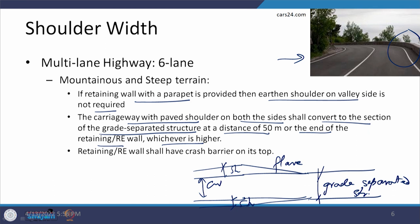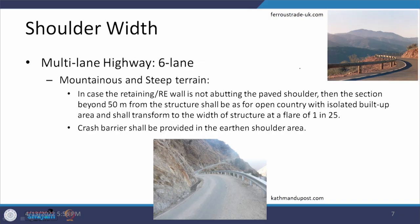If retaining walls, RE walls, or abutments are being provided, those should be considered. Another important provision is that the retaining wall or RE wall shall have a crash barrier on its top, so that if any vehicle goes out of control and hits the outer side, the crash barrier deflects it back onto the carriageway. In the photograph shown, the crash barrier has been provided on the retaining wall, which is also on a curve — serving the function for both conditions.